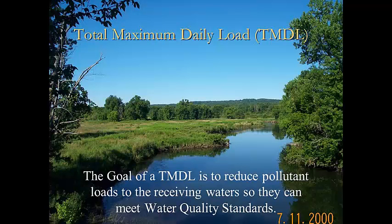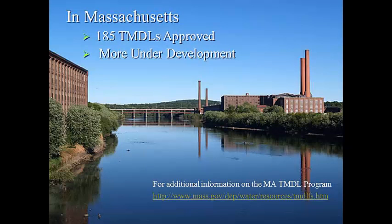The goal of the TMDL is to reduce the pollutant loads to receiving waters so they can meet water quality standards. TMDLs apply to existing and proposed stormwater discharges. TMDLs are implemented through the National Pollutant Discharge Elimination System, better known as NPDES permits for point source controls, and through stormwater management standards under the Wetlands Protection Act for both non-point and point source discharges. In Massachusetts, over 185 TMDLs have been approved and more are under development.